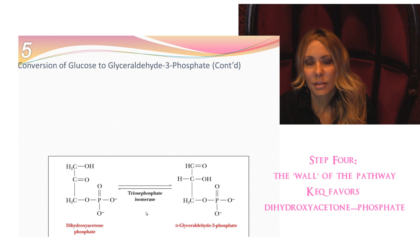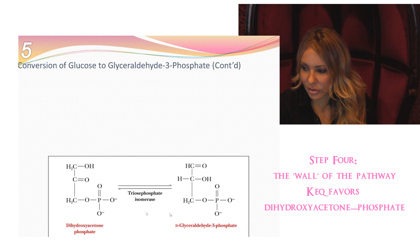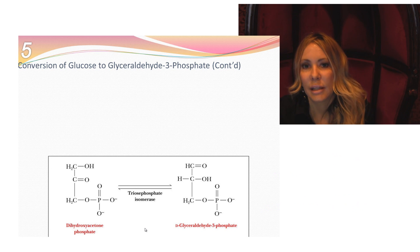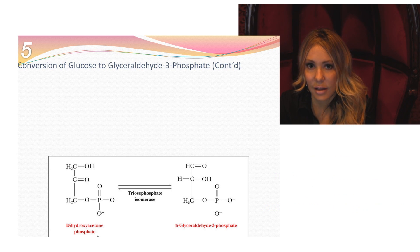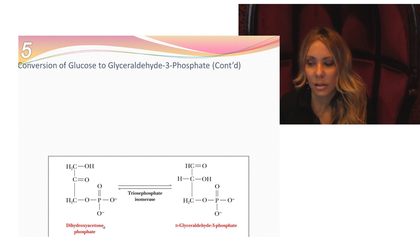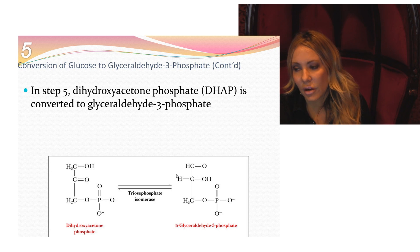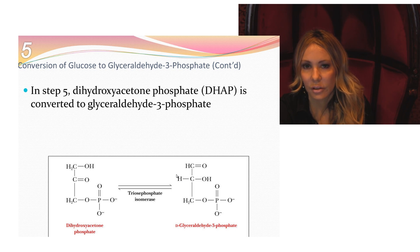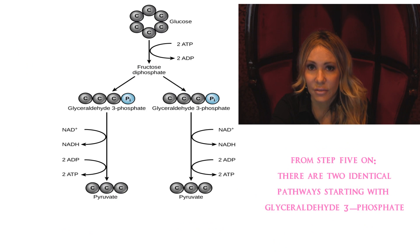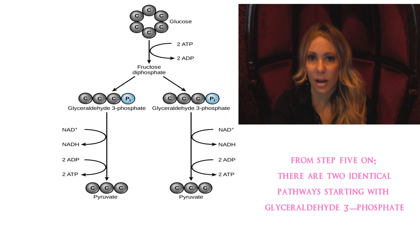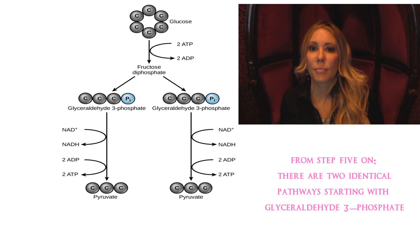The problem from this point on is that we need identical molecules — we want both to be glyceraldehyde 3-phosphate. This reaction has an equilibrium constant that favors dihydroxyacetone phosphate, so the reaction will need to be pulled forward. Dihydroxyacetone phosphate is converted to glyceraldehyde 3-phosphate, giving us two identical molecules of glyceraldehyde 3-phosphate that can participate in the rest of the pathway.